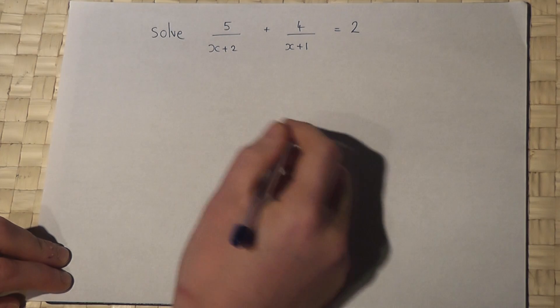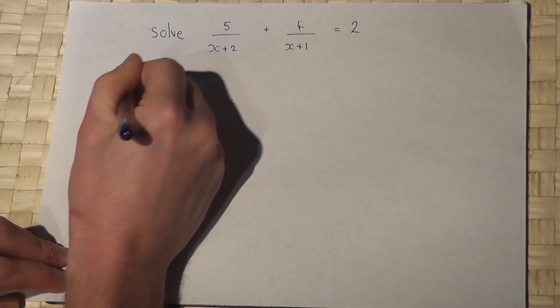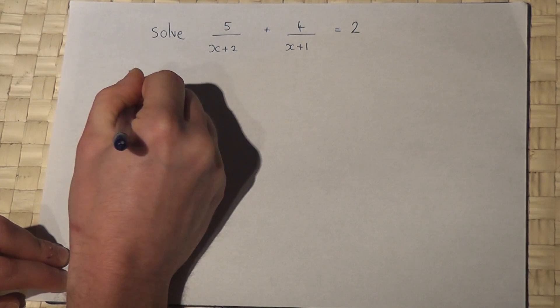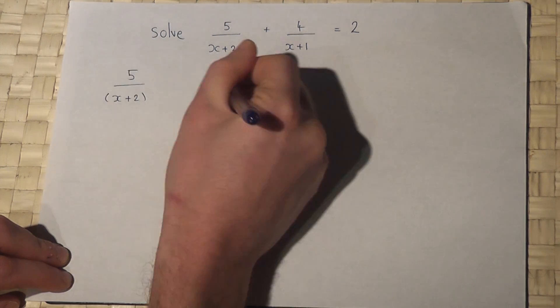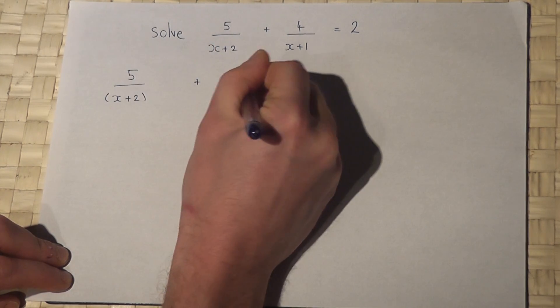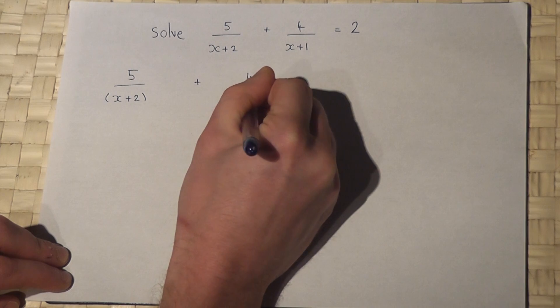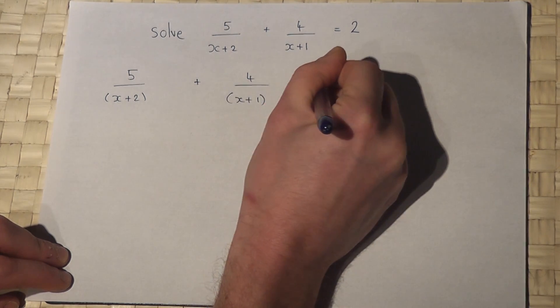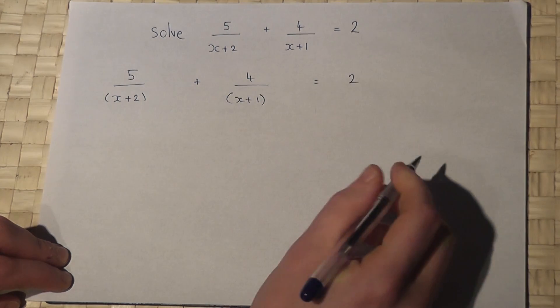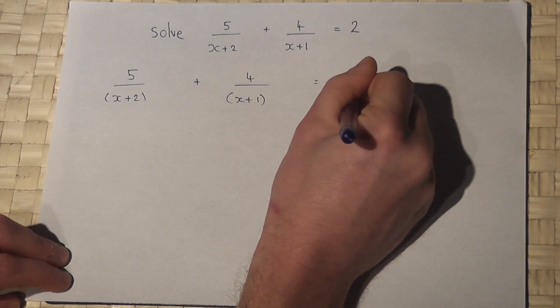So here's the method. I'll write up the question again, putting brackets around the bottom of the fractions, and I'll space the fractions out like so. And 2 is the same as 2 over 1.